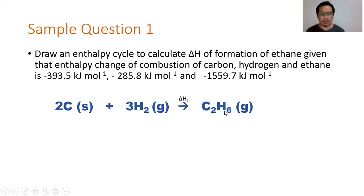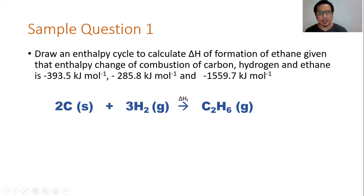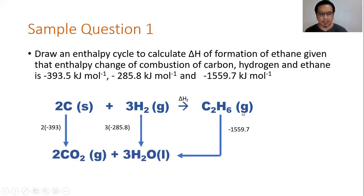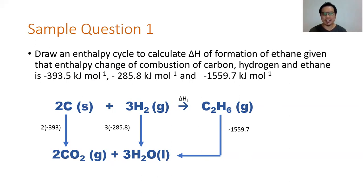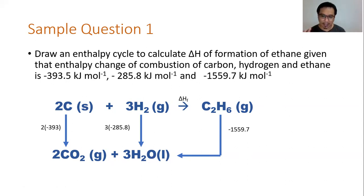We are given the supporting information of enthalpy change of combustion of carbon, hydrogen, and ethane. So draw out arrows and write down what is produced when carbon, hydrogen, and C₂H₆ are combusted. When you burn carbon, you get CO₂. When you burn hydrogen, you get H₂O. When you burn C₂H₆, you get CO₂ and H₂O. You can see the link — when the reactants combust, they give CO₂ and H₂O, and when C₂H₆ combusts, it also gives CO₂ and H₂O. That's how they are linked together.